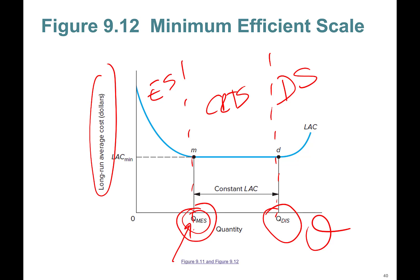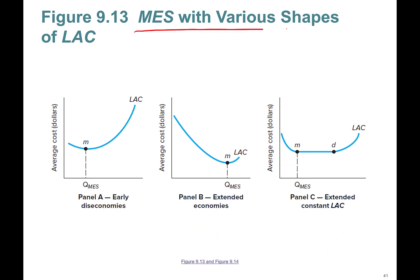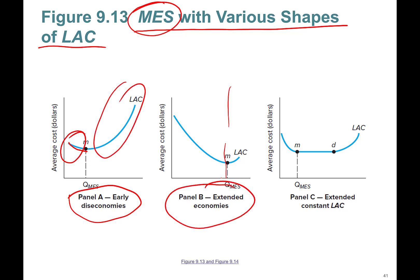This shows various shapes of long-run average cost curve and different minimum efficient scale—different points at which they reach minimum efficient scale. Early diseconomies: exhausted really fast. This is an industry where costs go down really fast and start climbing up quickly. This is extended economies, so economies of scale is longer. Early diseconomies means economies of scale is very small, then it goes up. This takes time. And this is extended constant long-run average cost curve. There's a constant returns to scale region here, here, and here. All right, so I'll see you in part six.